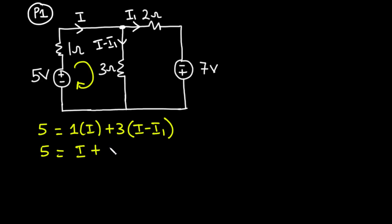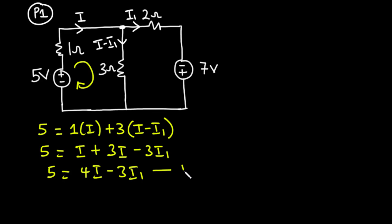Expanding the first loop equation: 5 equals i plus 3i minus 3i1. Adding i and 3i gives 4i, so we have 5 equals 4i minus 3i1. Let's call this equation 1.